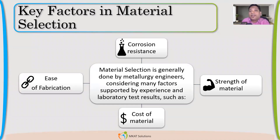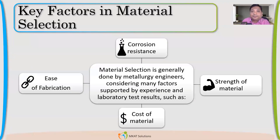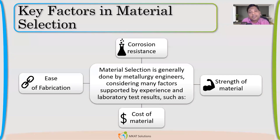Then the last factor is ease of fabrication. Finally, we are going to fabricate pressure vessel components with that material. So ease of fabrication means we should be able to form it and we should be able to weld it. So if all these four factors can be controlled, adjusted, and manipulated, then we can select a proper material for that service.